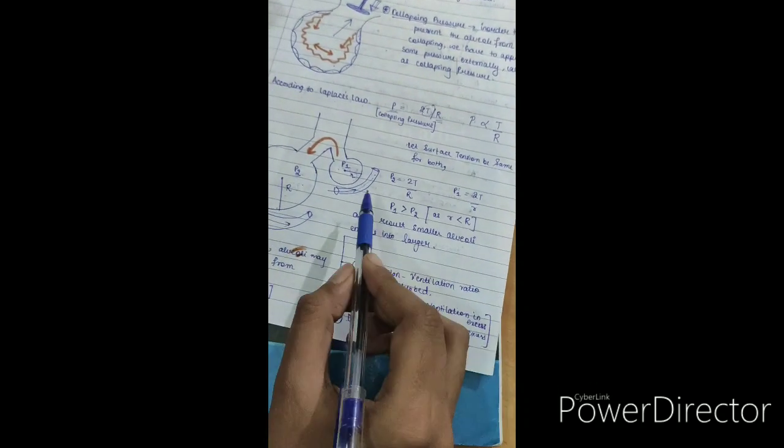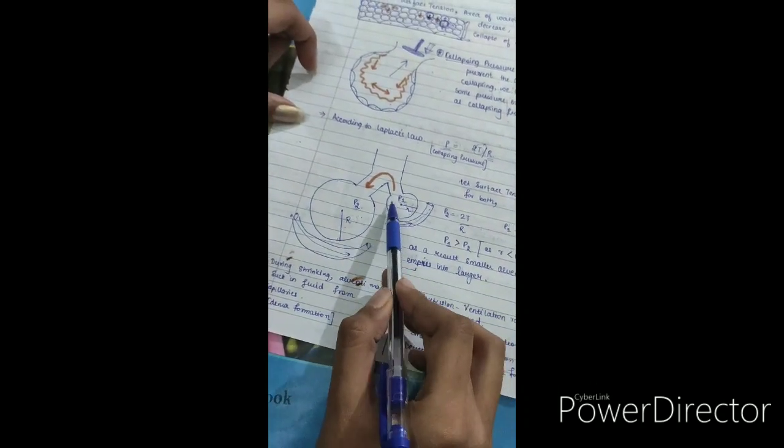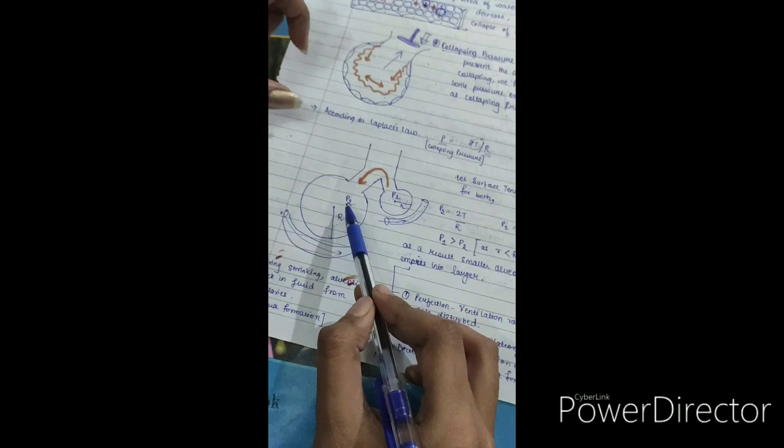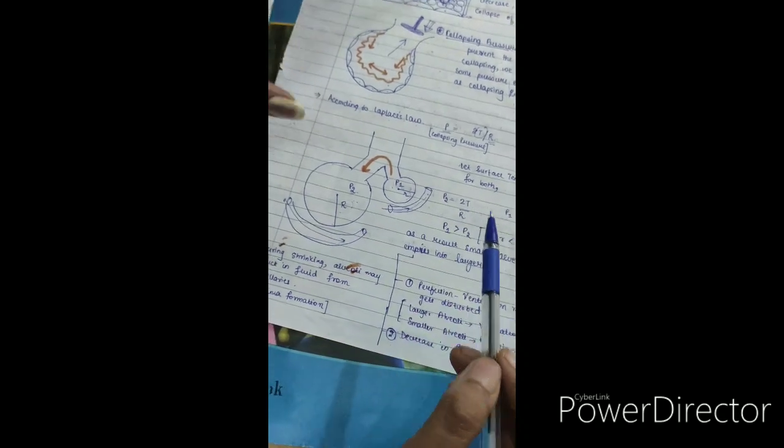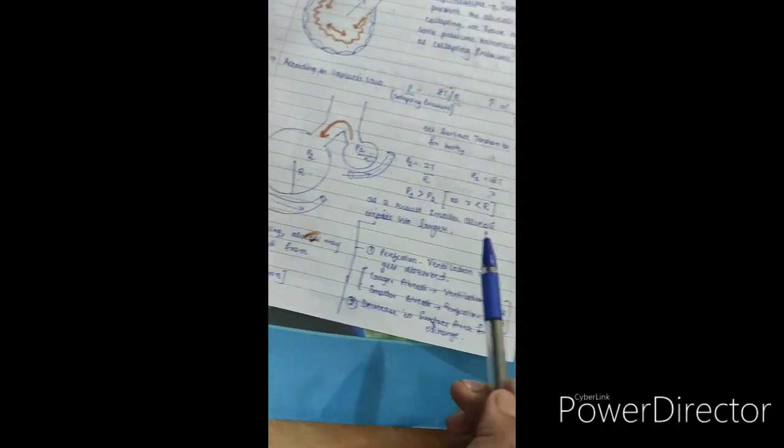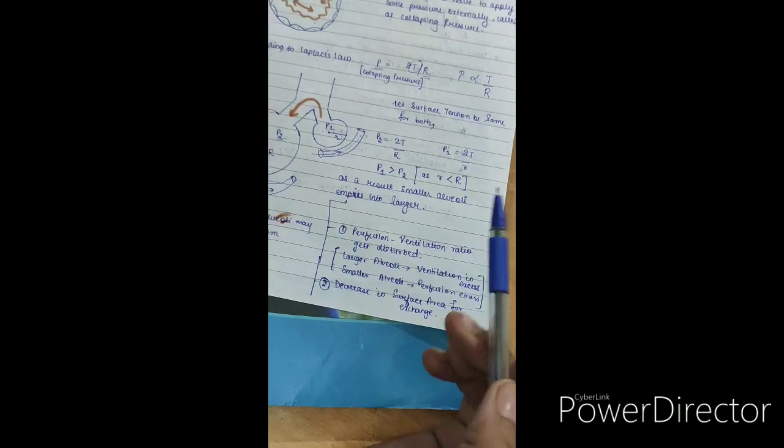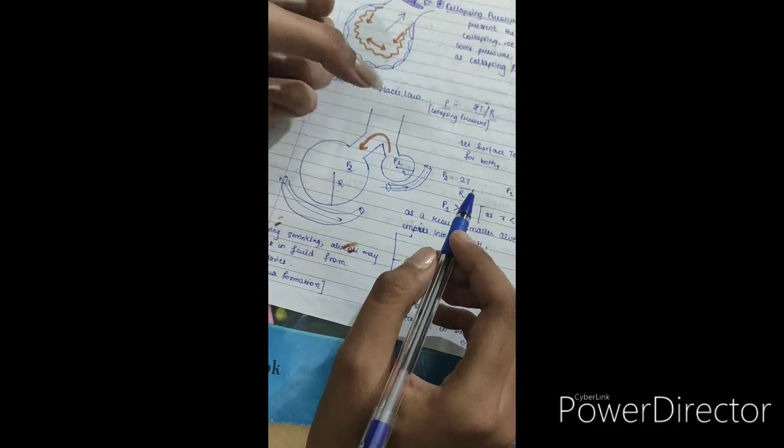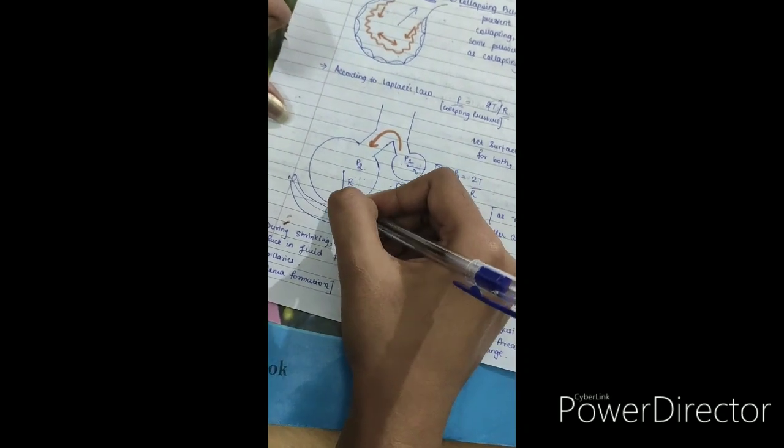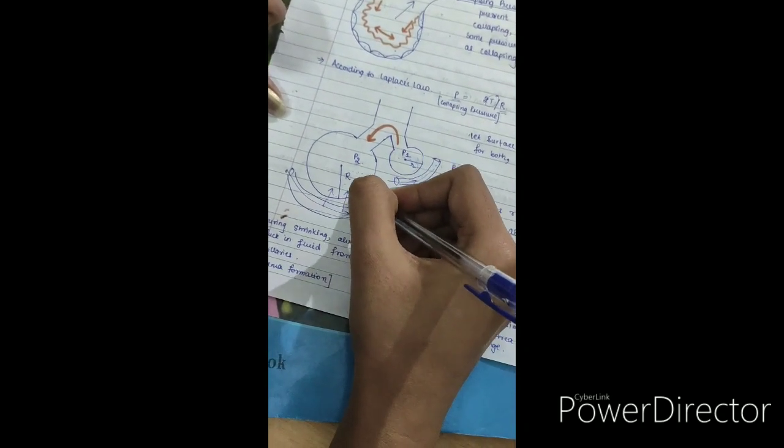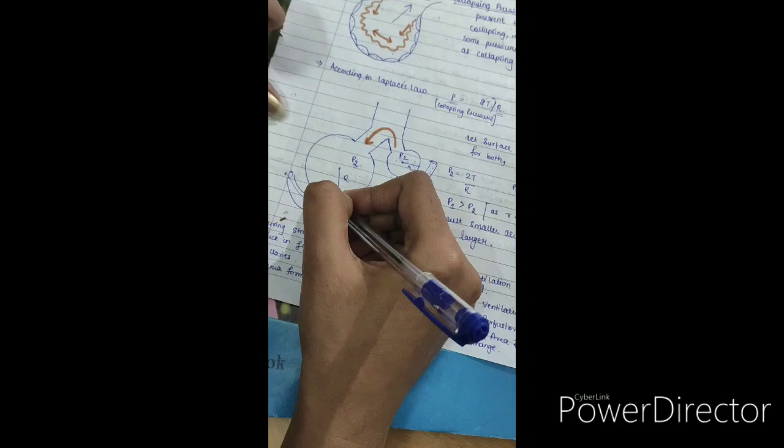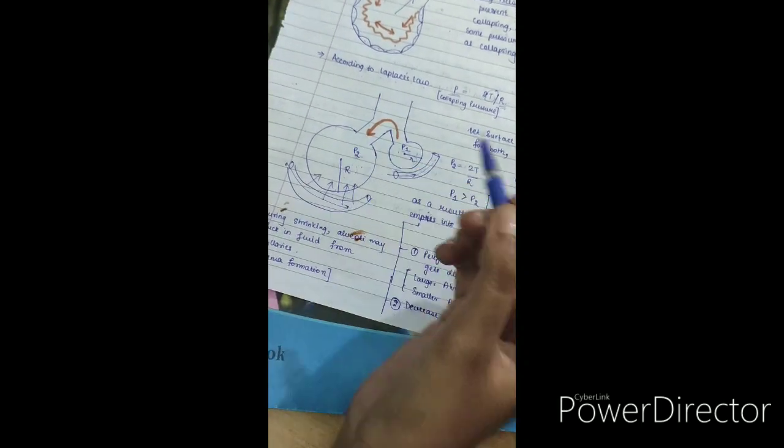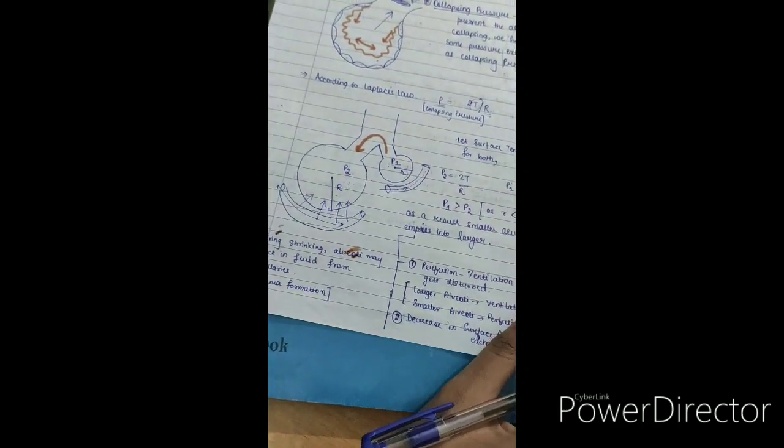Second, what will happen? If all the smaller alveoli empty into the larger alveoli, as a result the surface area would decrease. Surface area for the exchange would decrease. Second, what will happen if the alveoli collapse? They have the tendency to suck in the fluid from the capillaries. As a result, edema may develop. So these are all disadvantages.